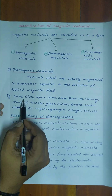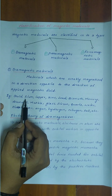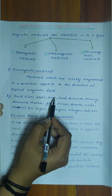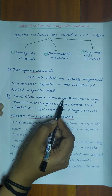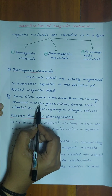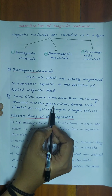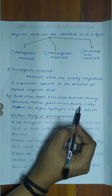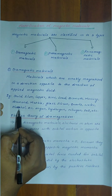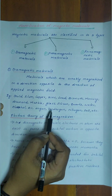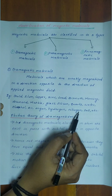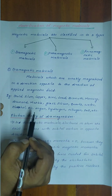Examples of diamagnetic materials are gold, silver, copper, zinc, lead, bismuth, mercury, diamond, marble, glass, silicon, quartz, water, alcohol, air, argon, hydrogen, nitrogen, salt, etc.